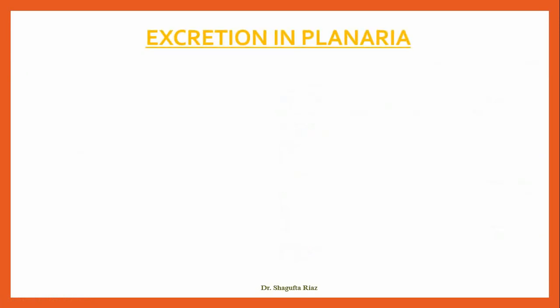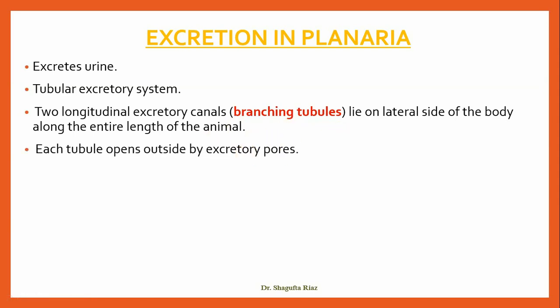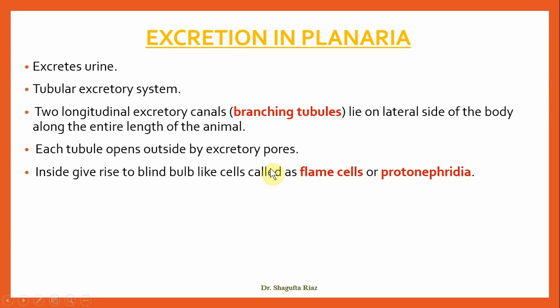The next example is planaria. Planaria excretes urine as its excretory product. Its excretory system consists of a tubular structure with two longitudinal excretory canals and branching tubules lying on the lateral side of the body along its entire length. These canals run throughout the body, and each tubule opens outside through excretory pores. Inside, they give rise to blind bulb-like cells called flame cells or protonephridia.